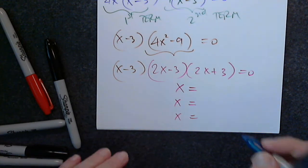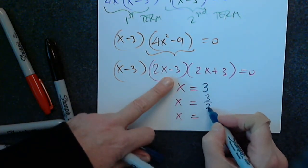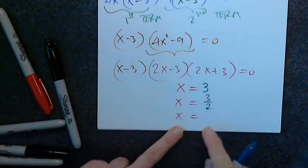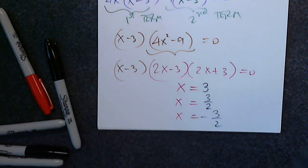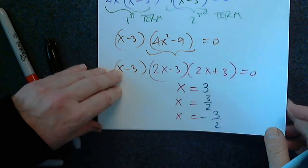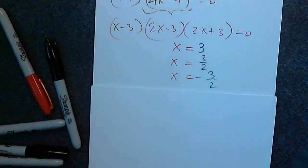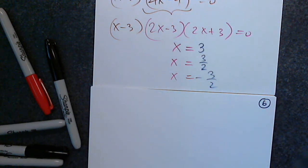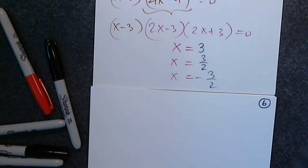So we expect 3 solutions. The factored form gives x equals 3, x equals 3 over 2, and x equals negative 3 over 2. As expected, a degree-3 polynomial has three solutions. One problem is far from enough — I expect you to practice between now and Wednesday. We take everything to one side in descending order, simplify by numbers, factor by grouping, and use the zero product principle.